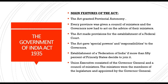The next topic is the Government of India Act 1935. The main features of the act were: the act granted provincial autonomy; every province was given a council of ministers and the governors now had to act on the advice of their ministers; and the act made provisions for the establishment of a federal court.